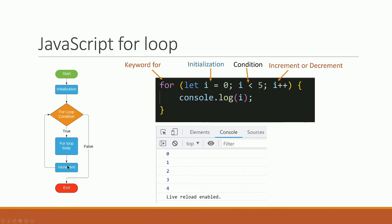Again, i increases — i++, so i plus 1. Starting at 0, we drop in: 1. If i is 1, is 1 less than five? True. We go to console.log and print one.